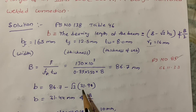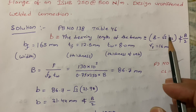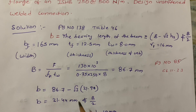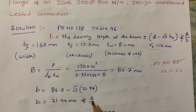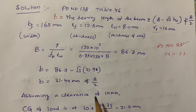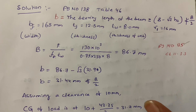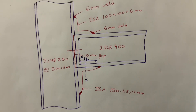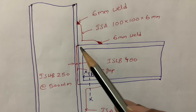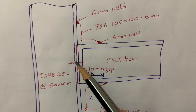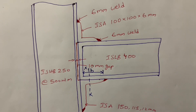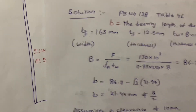After substituting all values into the equation, I got 31.44 mm, which is less than b by 2 — hence it is okay. After calculating this, I am assuming a clearance of 10 mm. As shown in the diagram, to connect these two members we need to maintain a 10 mm gap, which is the clearance gap.